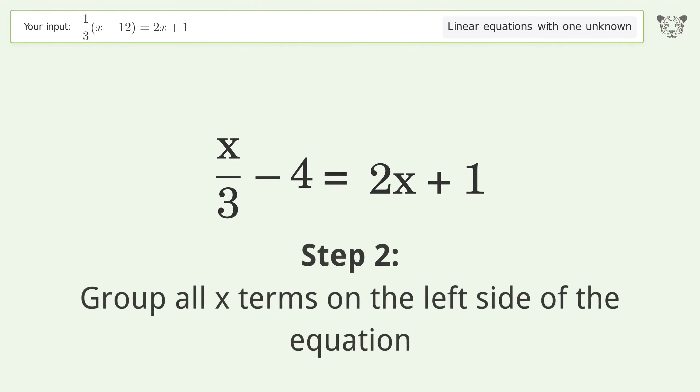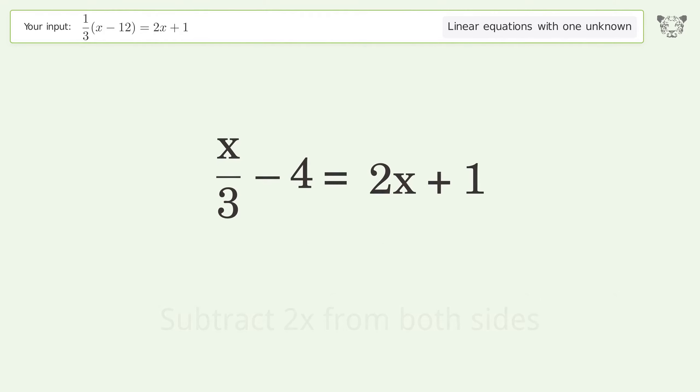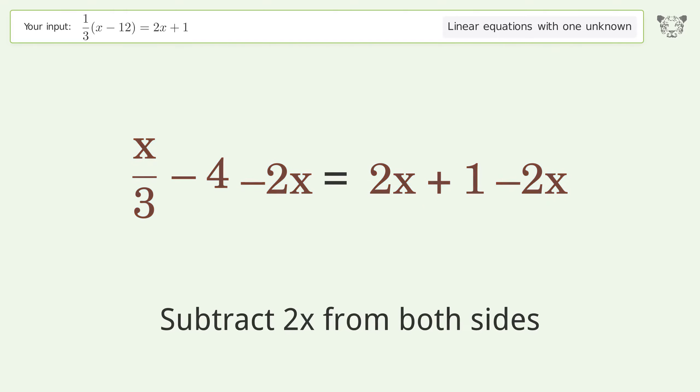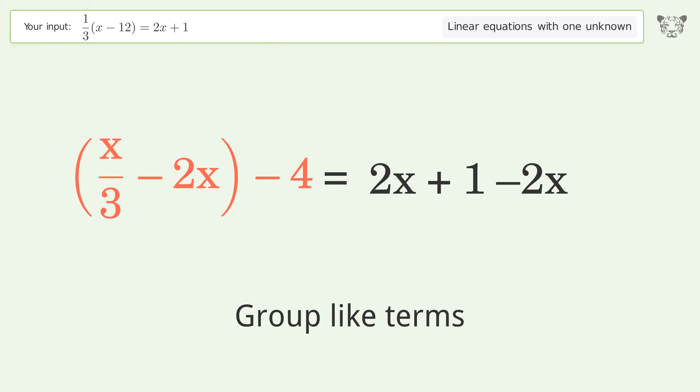Group all x terms on the left side of the equation. Subtract 2x from both sides. Group like terms. Group the coefficients.